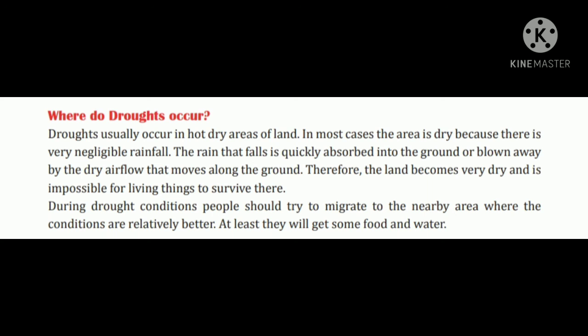Drought hot area mein hota hai, jahaan baarish bahut kam hoti hai ya naa ke baraabar hoti hai, wahaan sookha parne lagta hai. Aur jab thodi baarish padti hai, woh jo ground mein absorb ho jaata hai paani aur sookhi padti hai zameen, aur phir jo land hai wahan dry ho jaati hai, jo living things ke liye survive karna impossible hai. Jahan drought ki condition aa jaati hai, wahan ke jo log hain woh migrate karne lagte hain, doosre place mein jaane lagte hain, nearby area mein, jahaan condition thoda better ho sake, at least unko thoda bahut food aur water mil paaye.